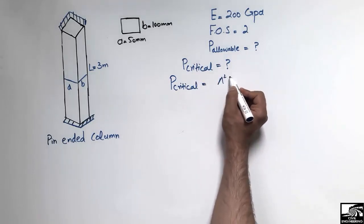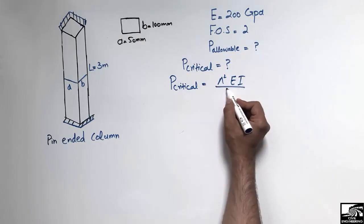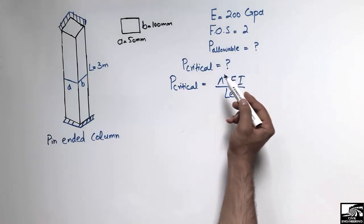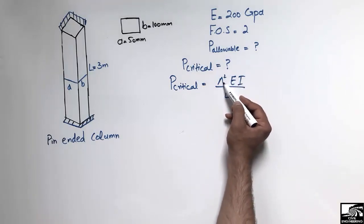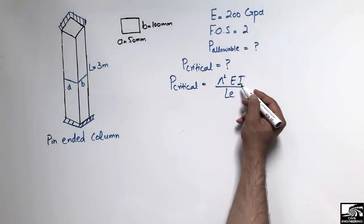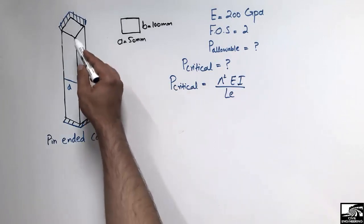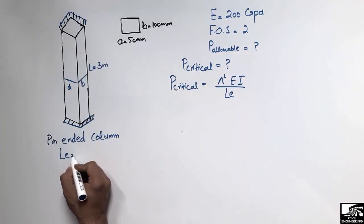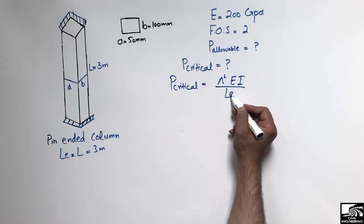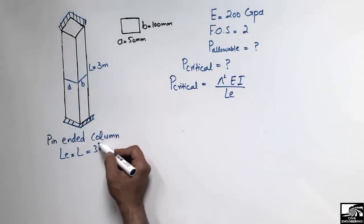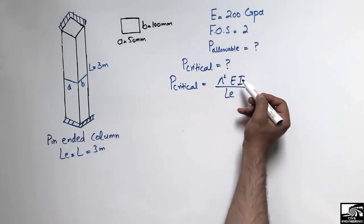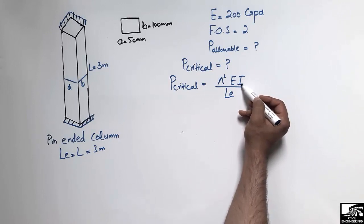To find P_critical, we use the Euler formula: P_critical = π²EI / L_E². Here, π is the constant, E is the modulus of elasticity (200 GPa), I is the moment of inertia, and L_E is the effective length. For a pin-ended column, L_E equals the original length L, so L_E = 3 meters.